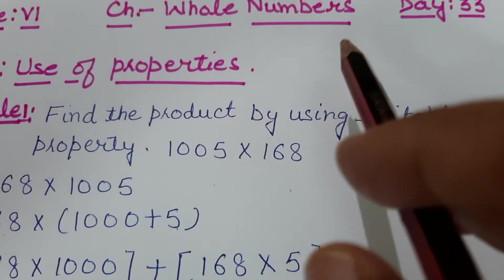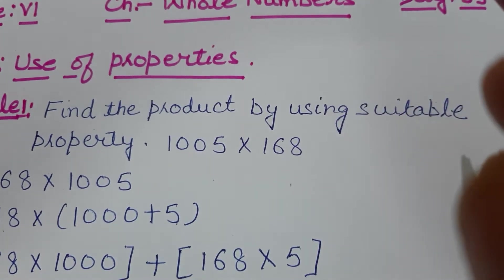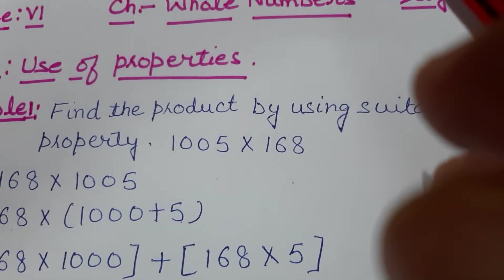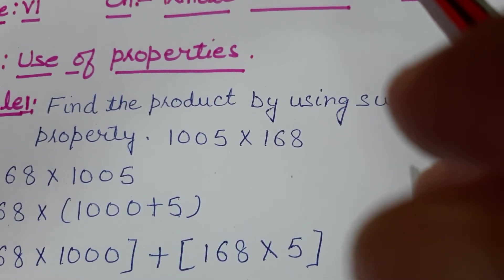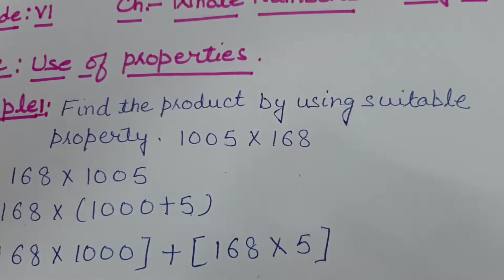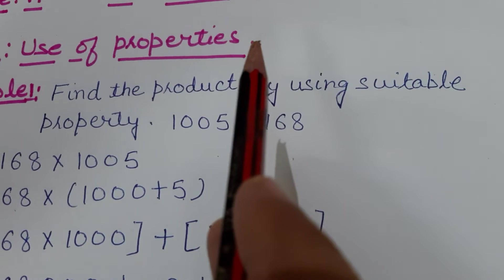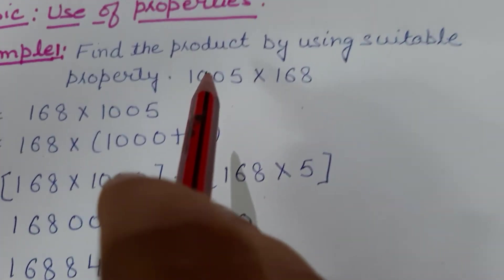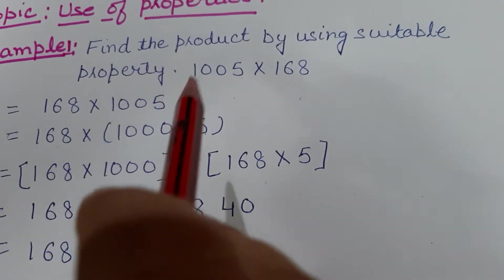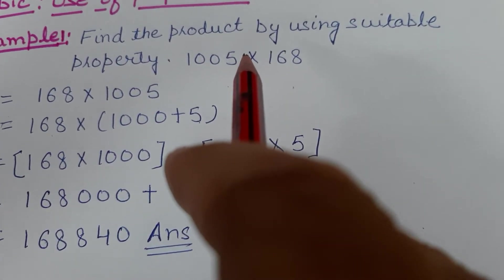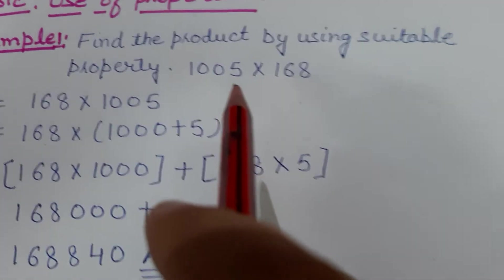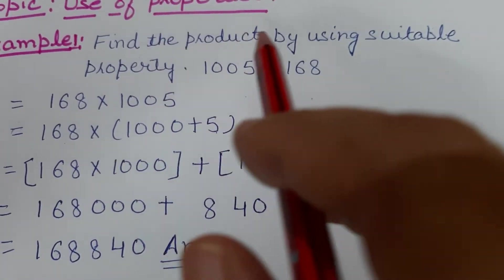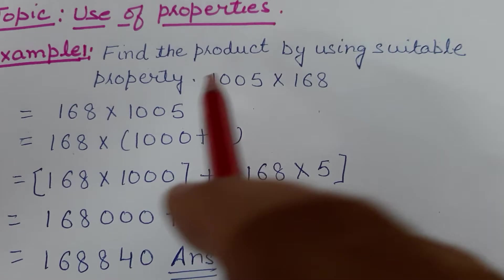In our previous session, we discussed how to use commutative property and associative property in our sums. Today we will continue the same topic. We will see how by using distributive property we can make our calculations easy. The first example is: find the product by using suitable property.